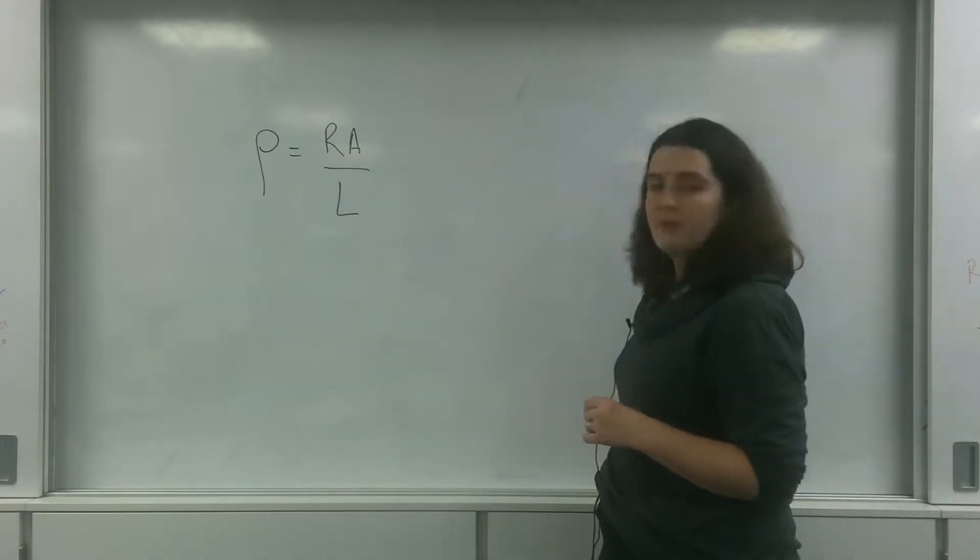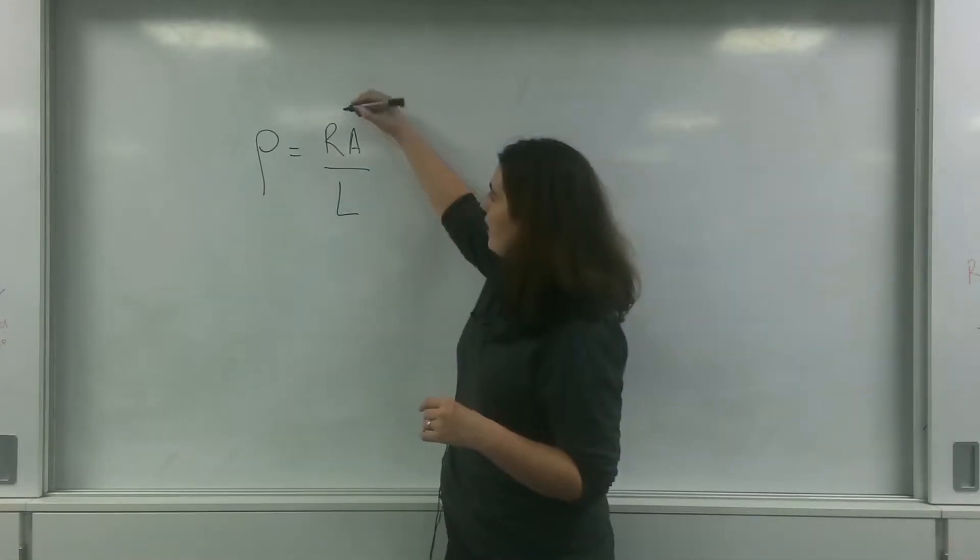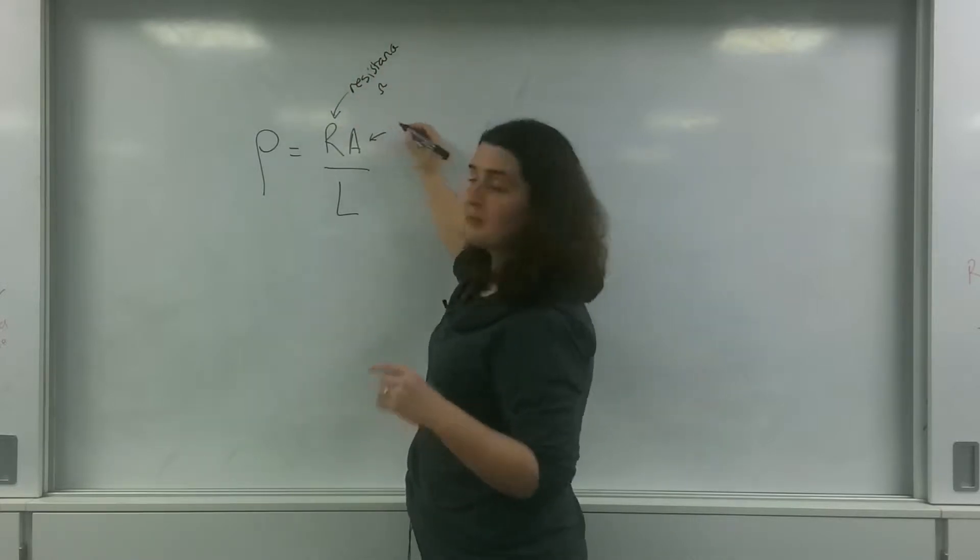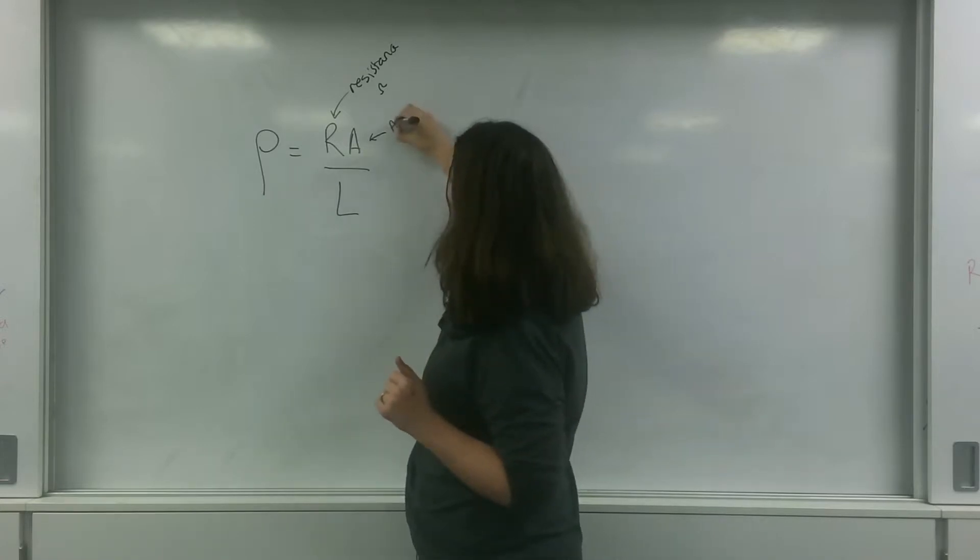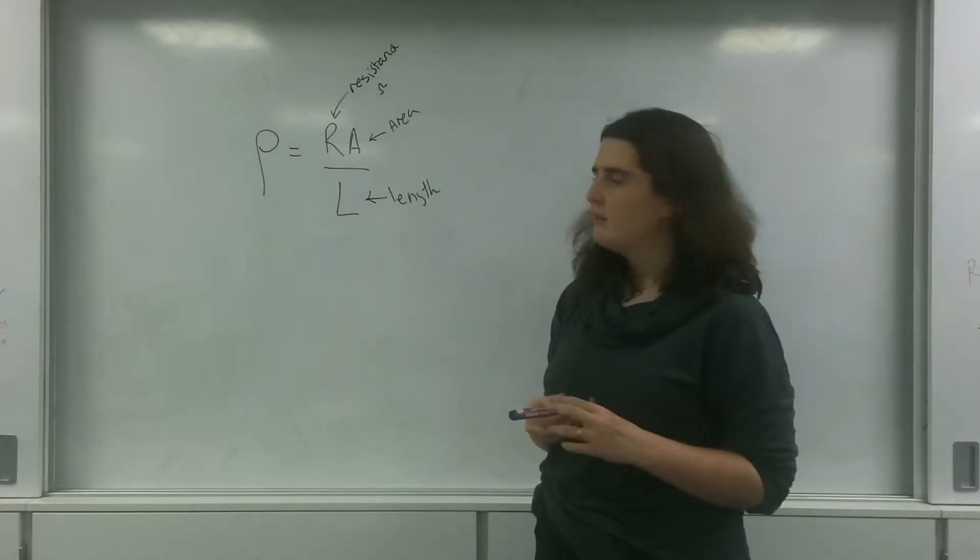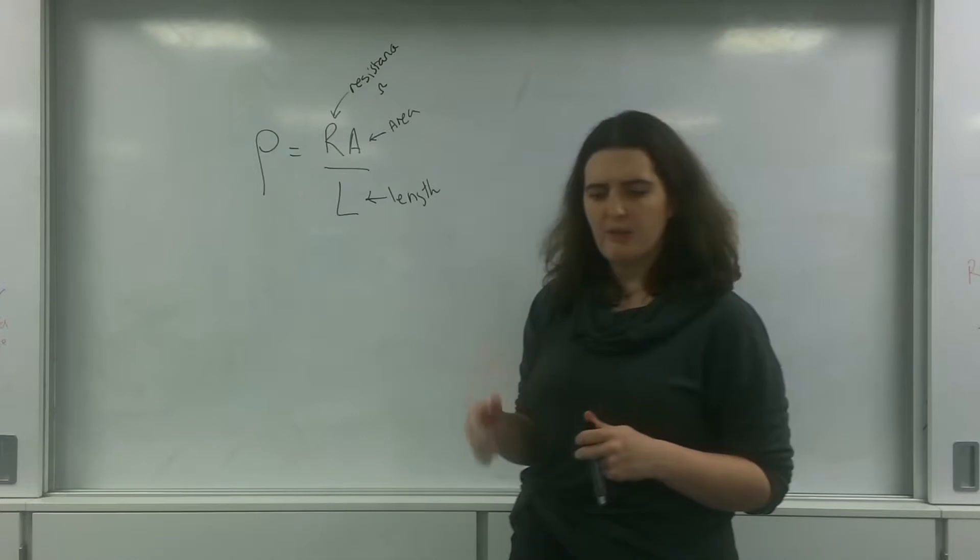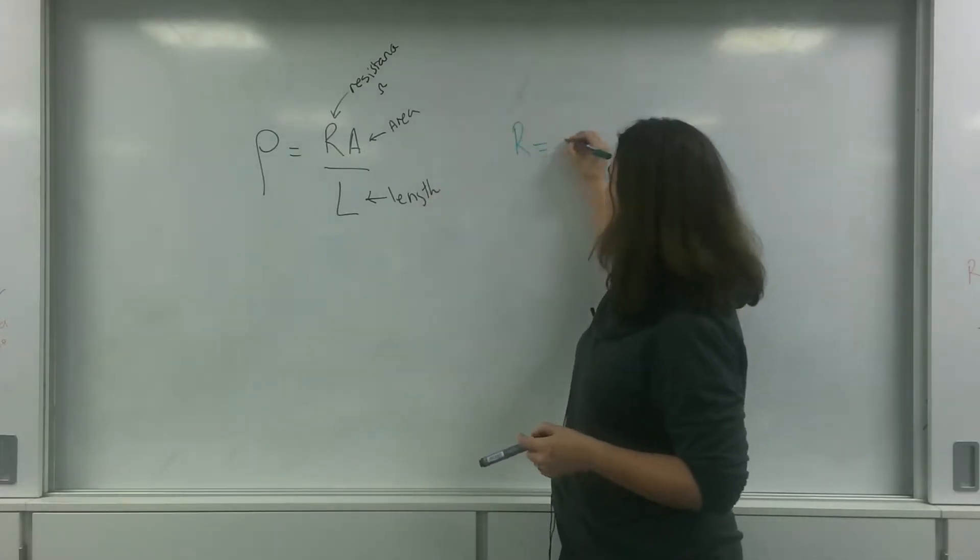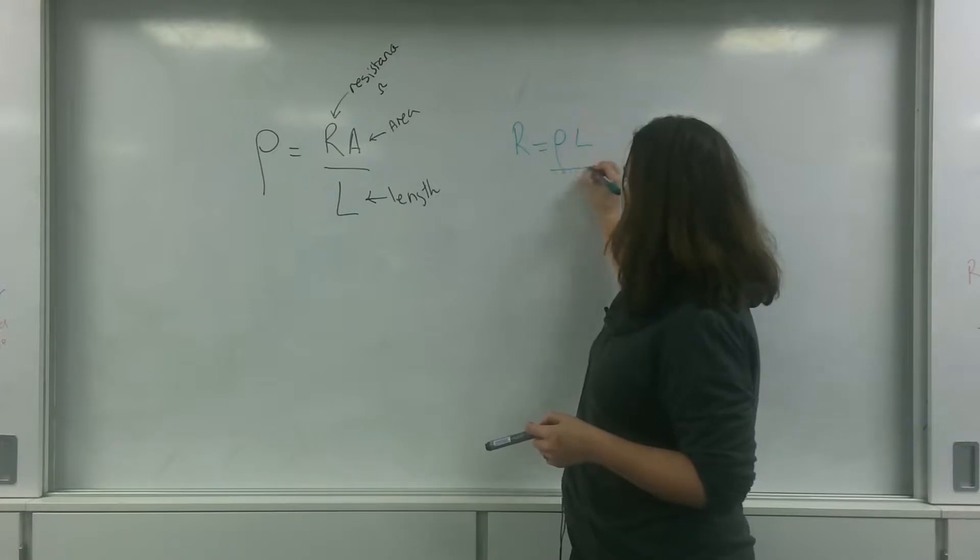And this is the equation of resistivity here. Rho equals resistance, and that is in ohms, times the cross-sectional area by the length. And if I rearrange this to have resistance, so I'm going to have R equals rho L over A.